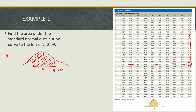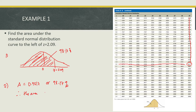Looking up z equals 2.09 in the z-table gives us 0.9817. Therefore, the area to the left of z equals 2.09 is 0.9817, or 98.17%.